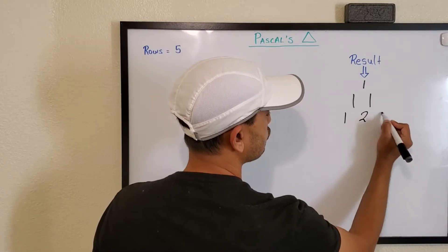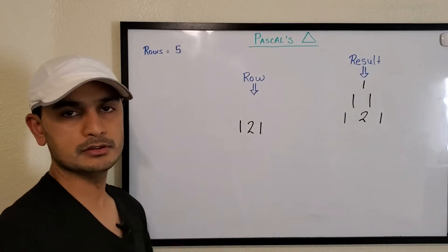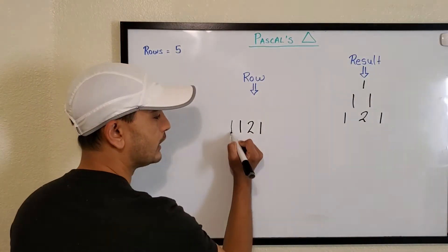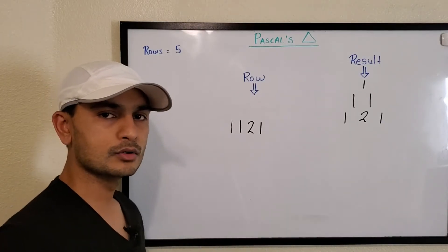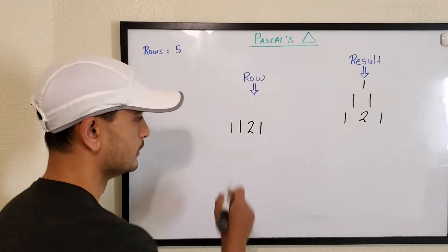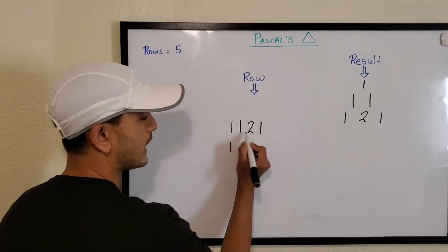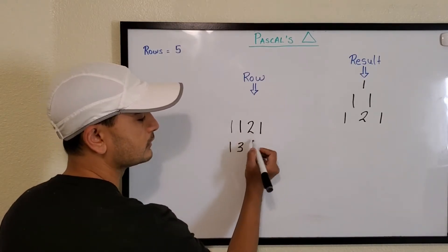Now this is our row variable. We repeat the process. What did we do last time? We added one at the start and then we iterate over the row and keep adding numbers. So we'll take first number as is, then we add these two numbers: three. We add these two numbers: three. And then we take last number as is.